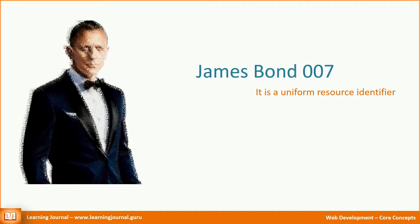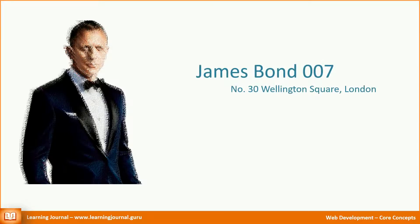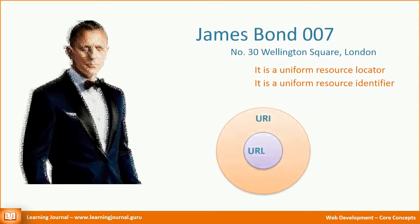Let me ask you another question. Using the above URI, can you locate James Bond? No, right? You cannot locate the resource because the URI does not contain an address. Let us add an address to the URI: James Bond 007, No. 30, Wellington Square, London. Now it becomes a URL. When we add address details to the URI, it becomes a URL — the L stands for Locator. However, there is an important point to note here: the URL still uniquely identifies James Bond, so it is still a valid URI. In other words, URL is a subset of URI. The diagram explains it more clearly.